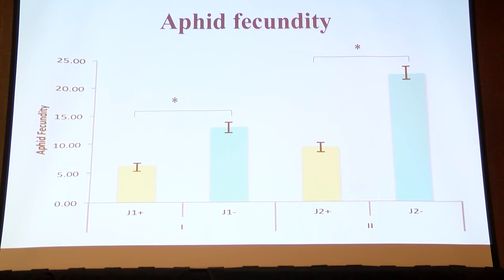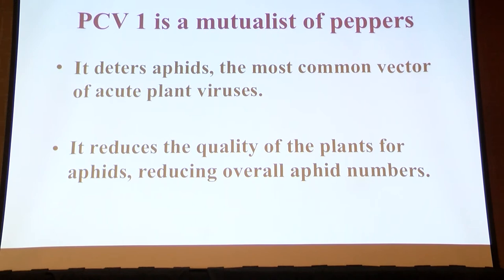So pepper cryptic virus 1 is a mutualist of peppers — it deters aphids, the most common vector of acute plant viruses, and reduces the quality of the plants for aphids.